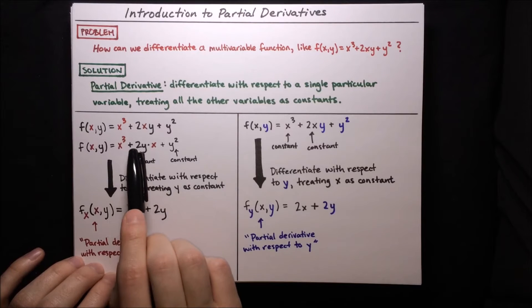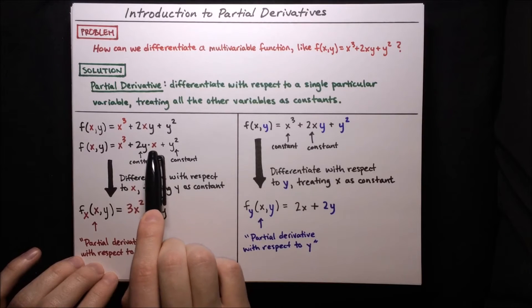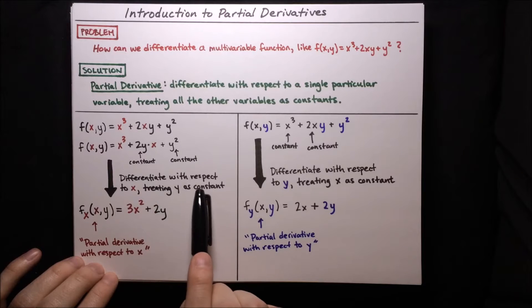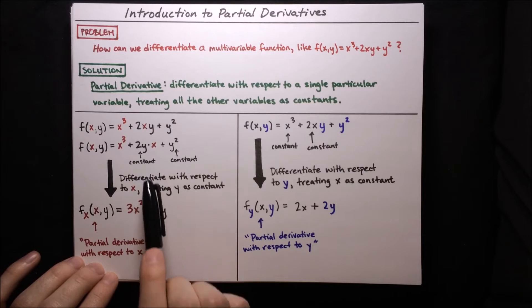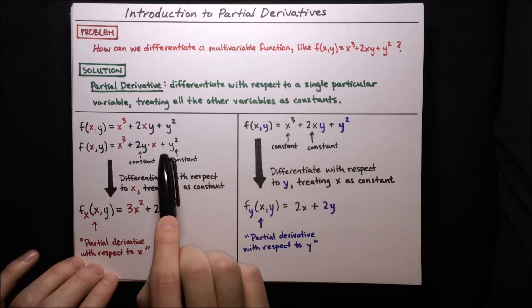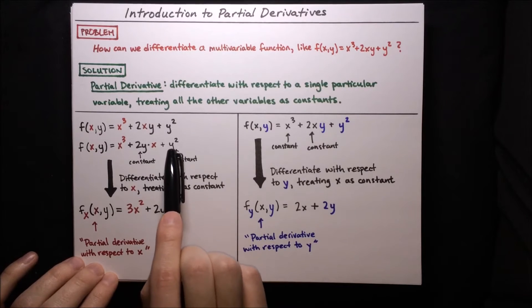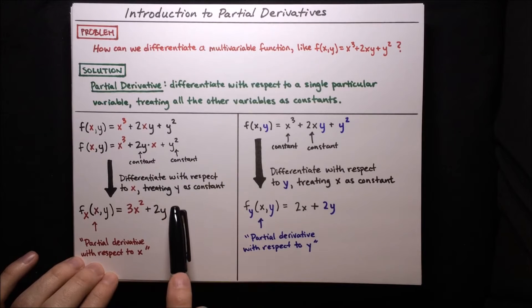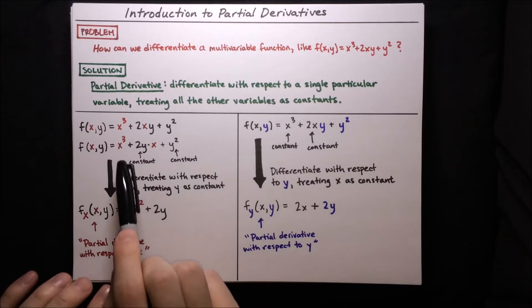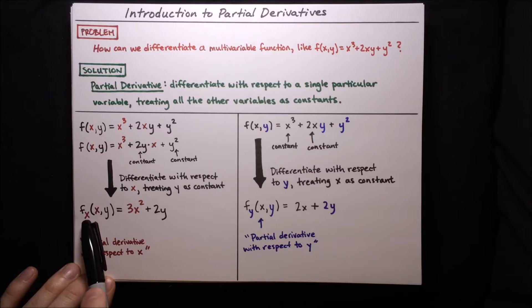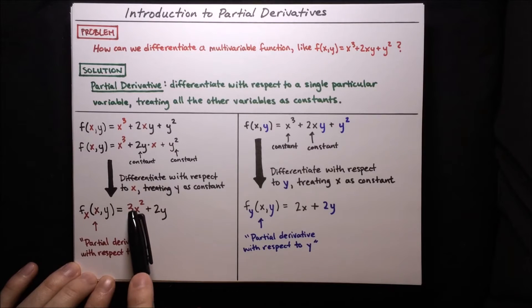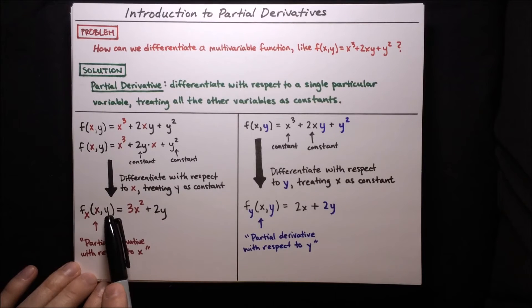The second term 2y times x, differentiating with respect to x and treating y as a constant, we're just left with the constant multiplying x, which is 2y. The y² term, since we treat it as a constant, just goes away — the derivative of any constant is 0. To indicate we've taken the partial derivative, we write the function with a subscript x, indicating we differentiated with respect to x and held all other variables constant.